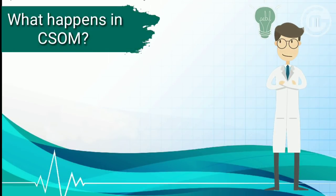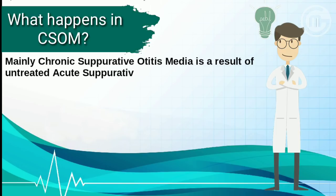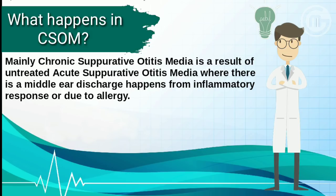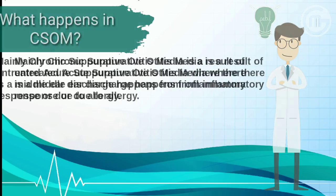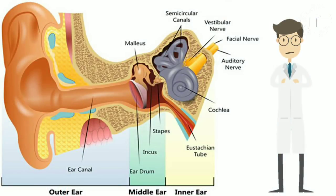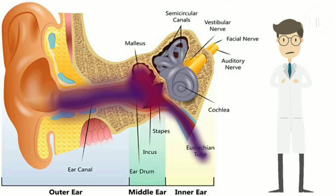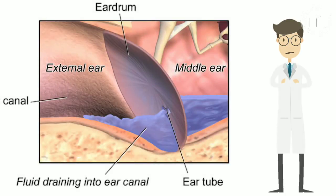What happens actually in Chronic Suppurative Otitis Media? It is mainly a result of untreated acute suppurative otitis media, where there is middle ear discharge from inflammatory response or due to allergy. It commonly occurs by an ascending infection via the Eustachian tube, causing pressure build-up in the middle ear and eventually leading to tympanic membrane perforation. A perforation becomes permanent when the edges are covered by squamous epithelium and it does not heal spontaneously.